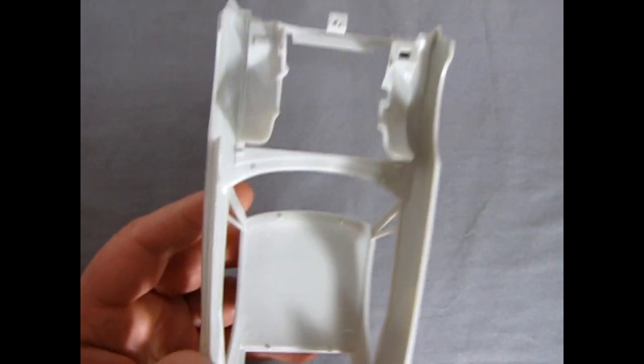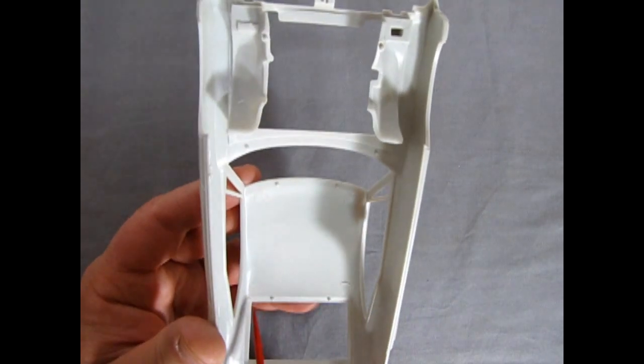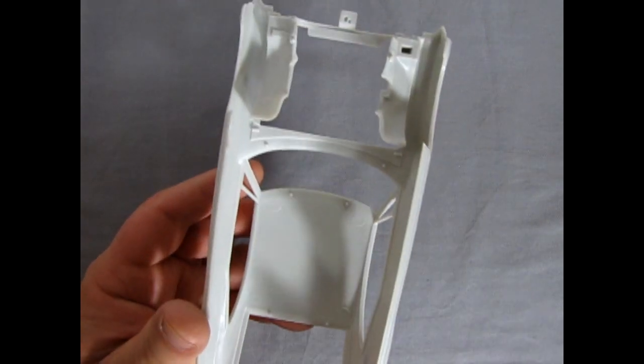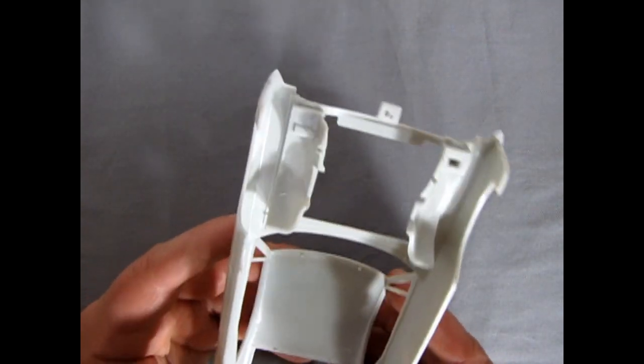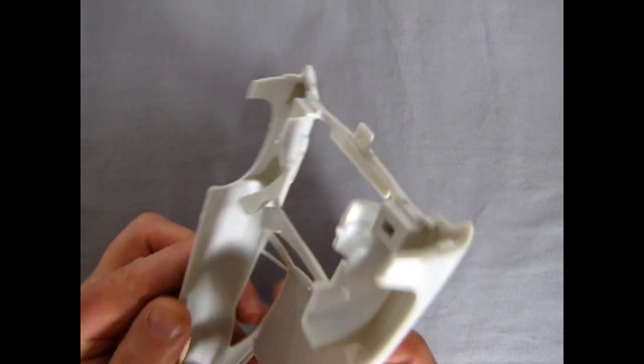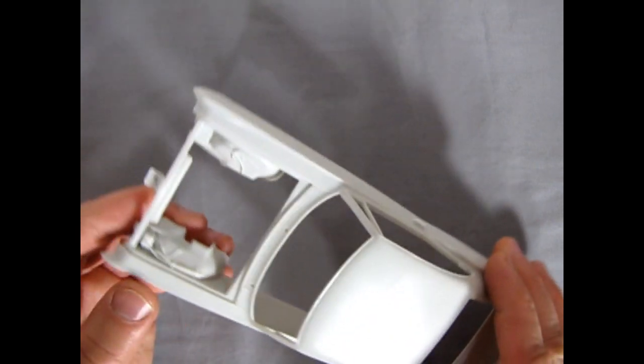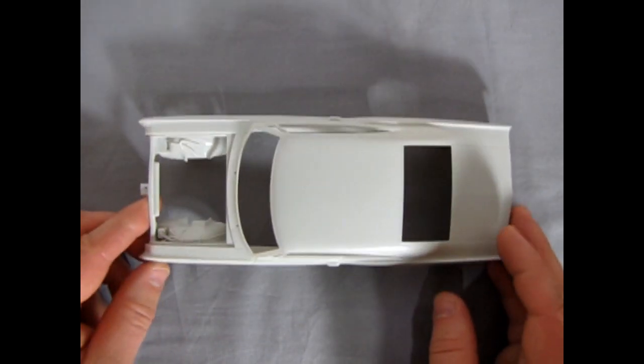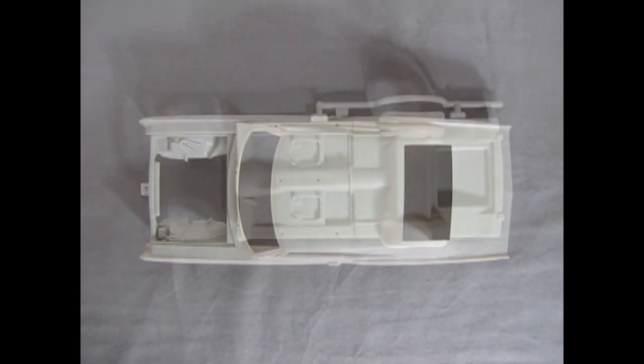There are a few mold marks on the top of the roof in here, which could easily be removed with your number 16 Hobby Blade. And again, a nice, perfect effort from AMT Ertl.